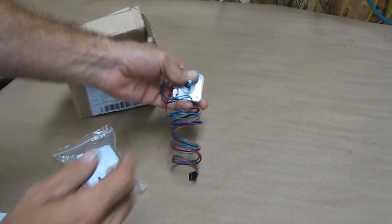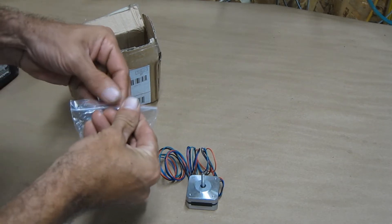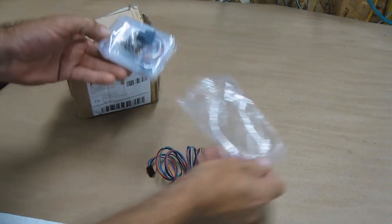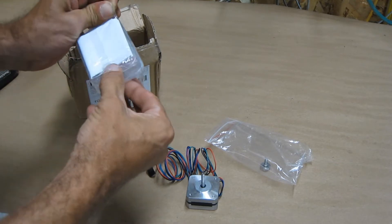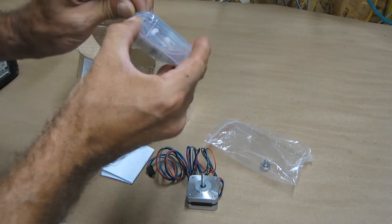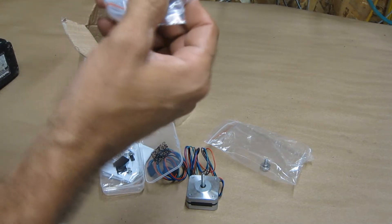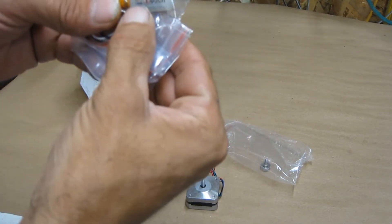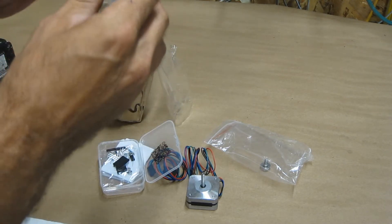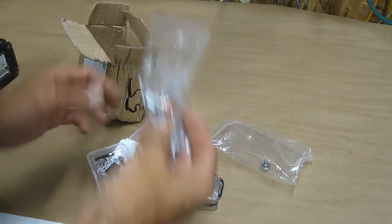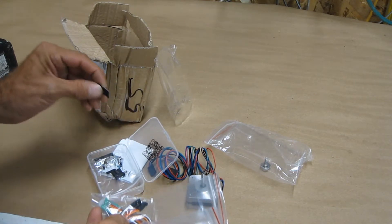This stuff just came in the mail today. This is the little pancake motor. This is the 3D touch. It's actually a bootleg, a bootleg 3D touch clone. It says based on AntClabs touch. That's funny. Hope it works. It was cheap, it was $16 compared to $52 or $60 for the real deal.